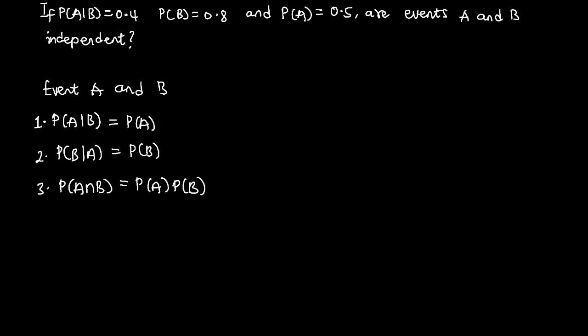Welcome to this lesson. In this video I'm going to teach about independence of events. I have some examples here, but first I want to explain the concept of independence. For events A and B, there are three statements to check: the probability of A given B should equal the probability of A; the probability of B given A should equal the probability of B; and the probability of A intersection B should equal the probability of A multiplied by the probability of B.